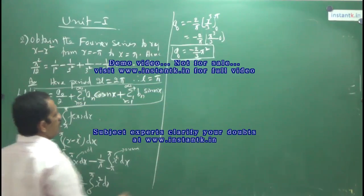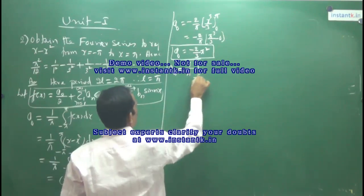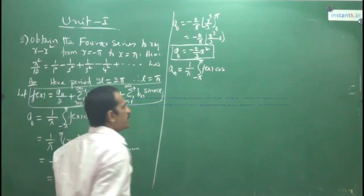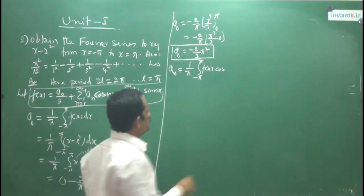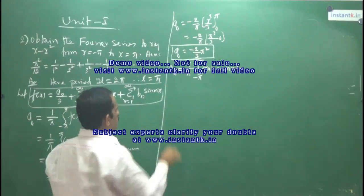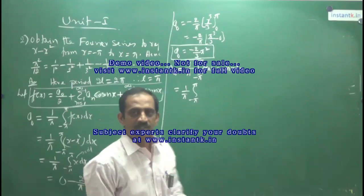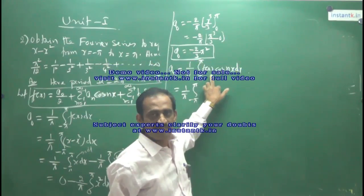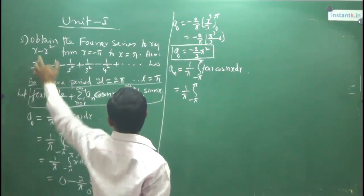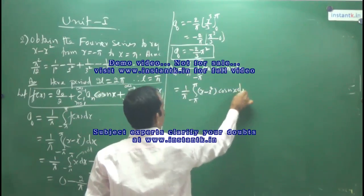Next, find Aₙ. The definition for Aₙ is (1/π) ∫₋π^π f(x) cos(nx) dx. So Aₙ = (1/π) ∫₋π^π (x − x²) cos(nx) dx. We can split this as (1/π) [∫₋π^π x cos(nx) dx − ∫₋π^π x² cos(nx) dx].